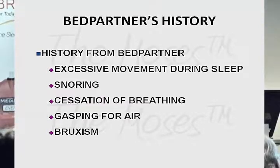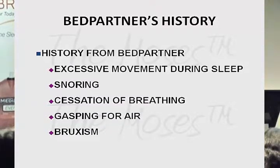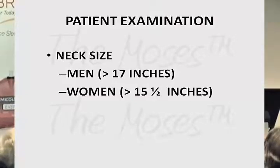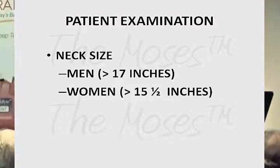Bed partner history is important. A lot of times patients come in with the bed partner — never let them sit in the waiting room if you can, because you get valuable information. Ask: excessive movement during sleep, snoring, cessation of breathing, gasping for air, grinding teeth. Neck size is important: men over 17 inches and women over 15.5 inches have a much higher correlation with apnea.